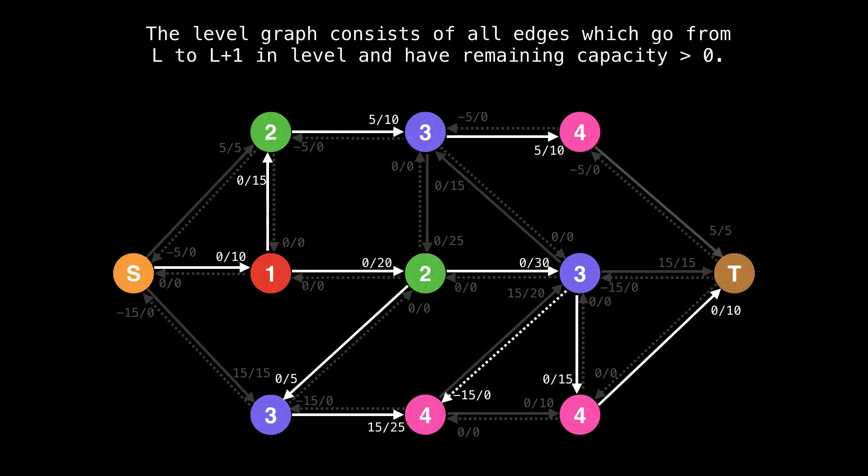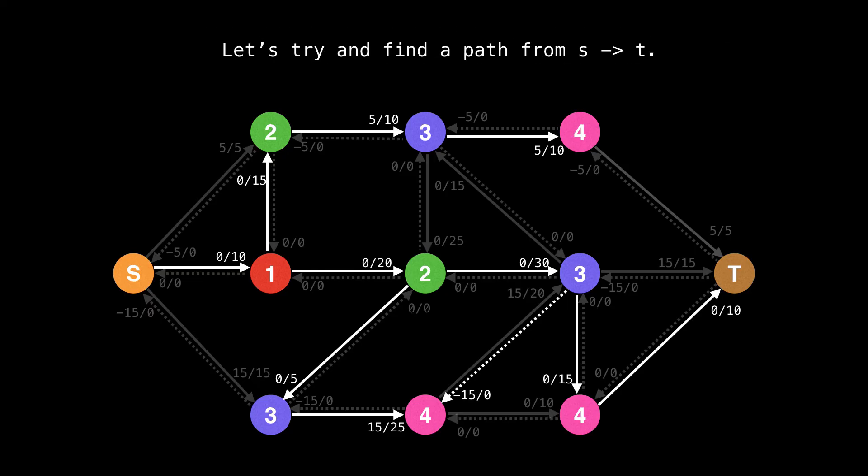Awesome. So this is our new level graph. You can see that this time we have one extra layer to play with. Let's try and find a path from s to t. Once again, we start at the source and probe forwards using only edges as part of the level graph.